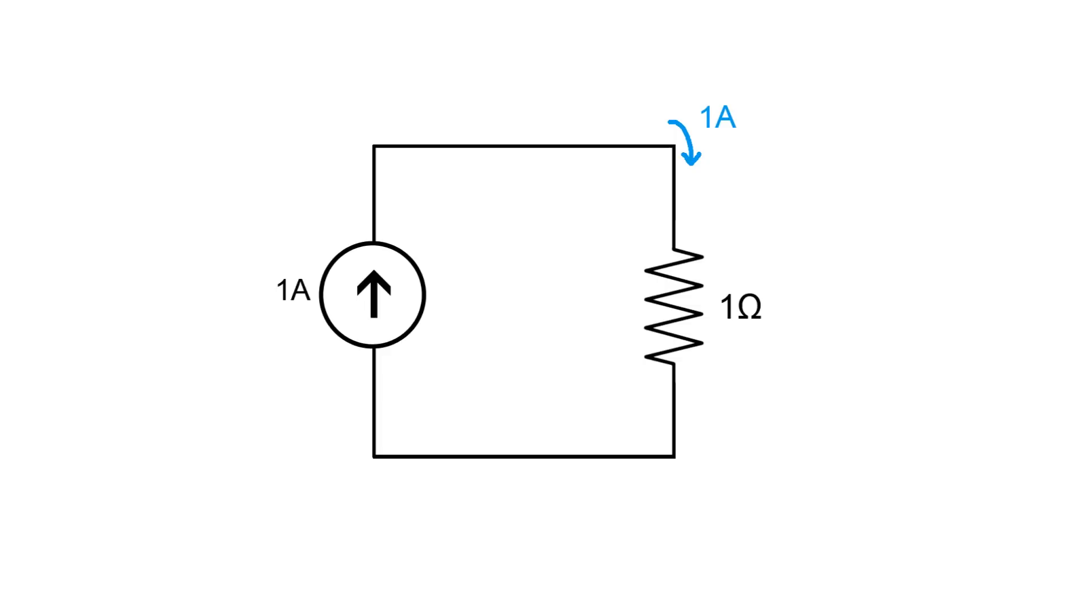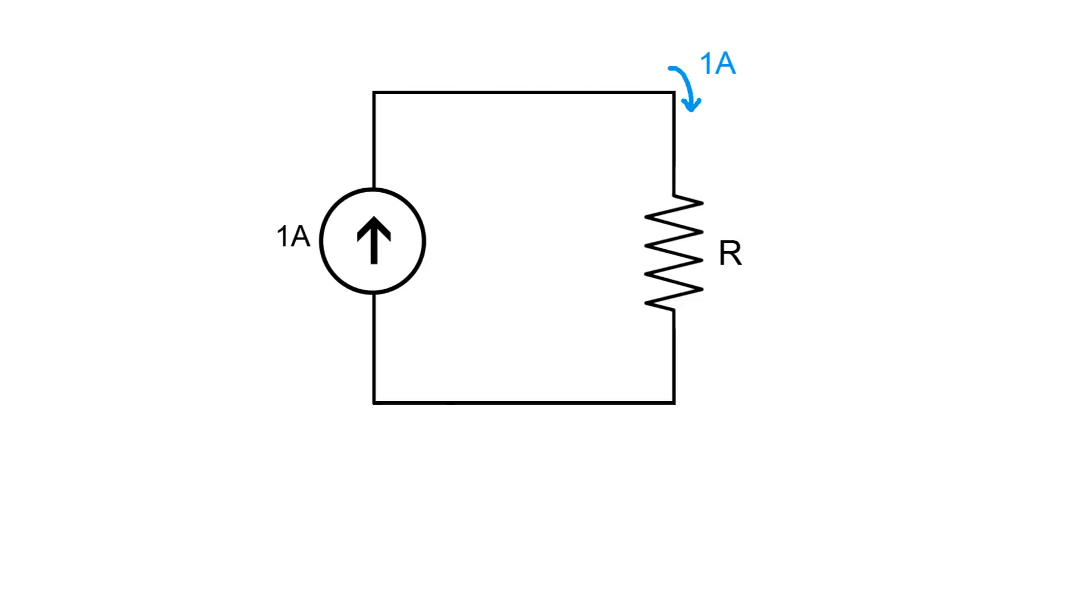Since it's a constant current source, no matter what resistance I connect it to, the current flowing through the circuit will always be exactly 1 amp. Now let's say I connect an unknown resistance, and let's call that resistance R. And let's connect a multimeter across the resistance and use it to measure the voltage across R. And let's call that voltage V.